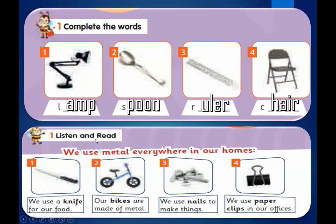Listen and read: we use metal everywhere in our phones — we can use metal to make a lot of things. Such as: number one, a knife — we use a knife to cut our food, vegetables, and fruit. Number two — we also use metal to make pipes. Number three — we use nails to make things. Number four — we use paper clips in our offices.